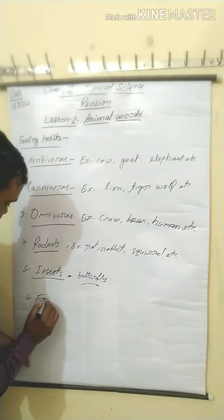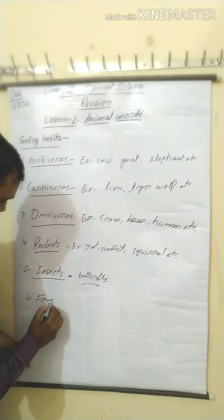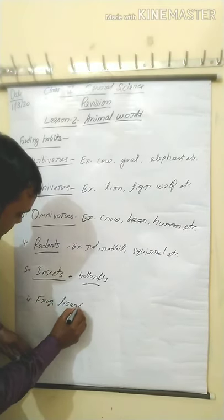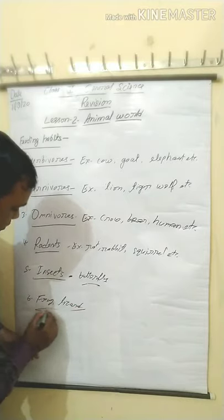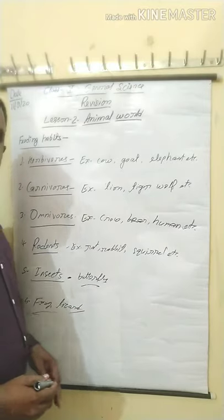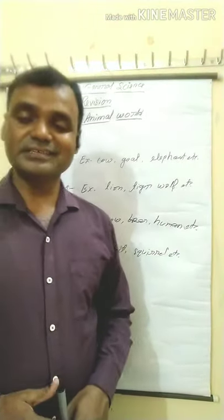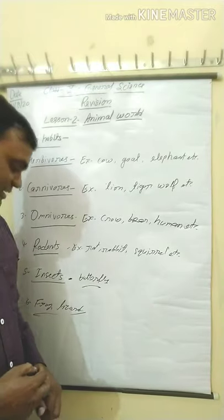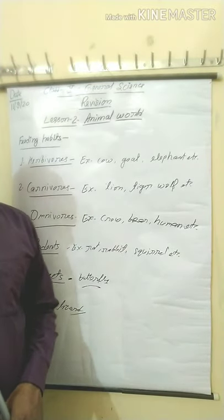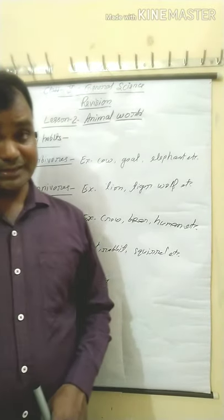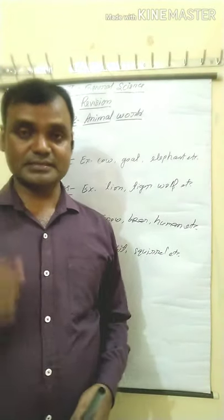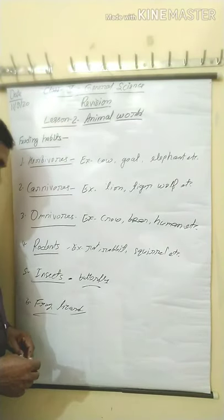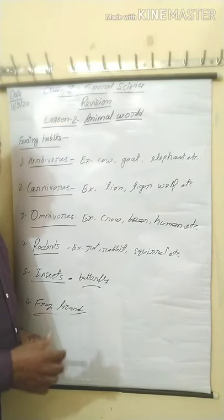Next: Frog and lizard. Frog and lizard both have a sticky tongue. With their long and sticky tongue, they catch their prey — you can say, they catch insects.